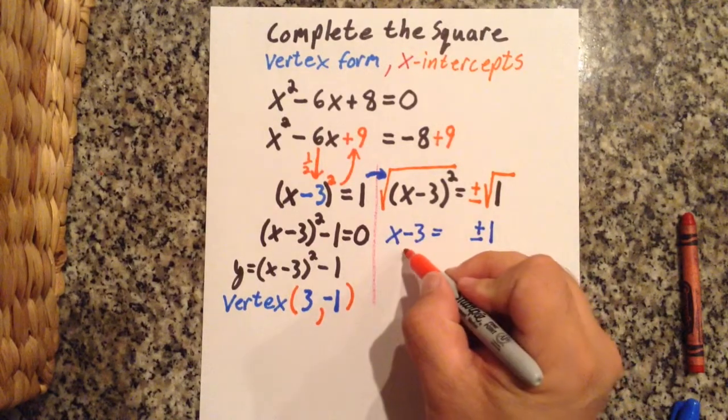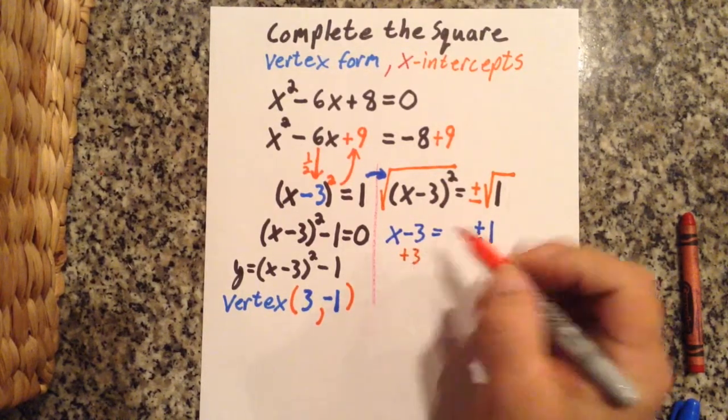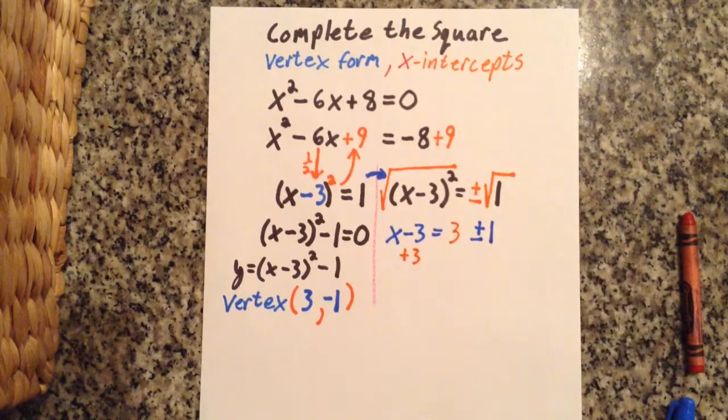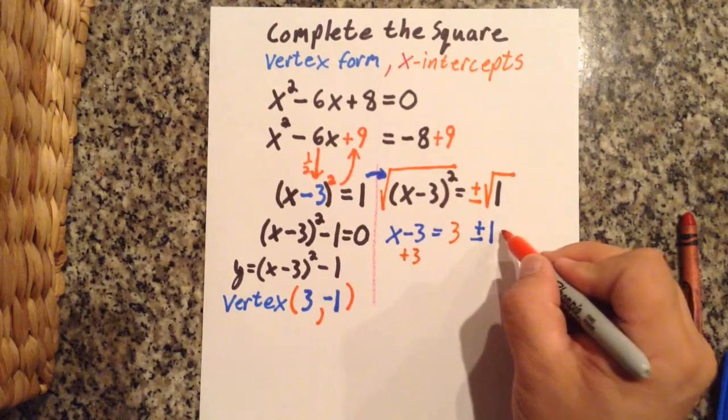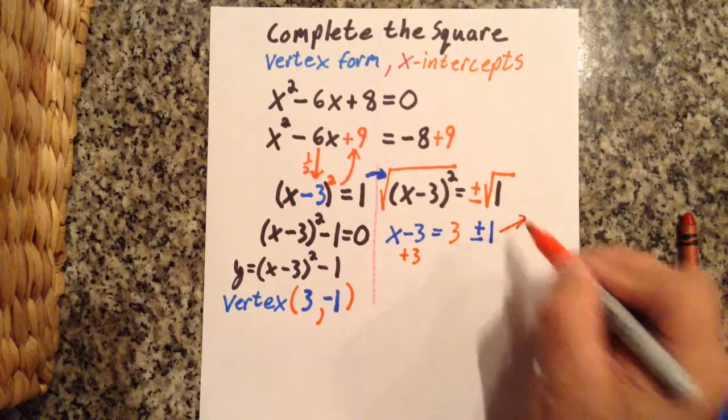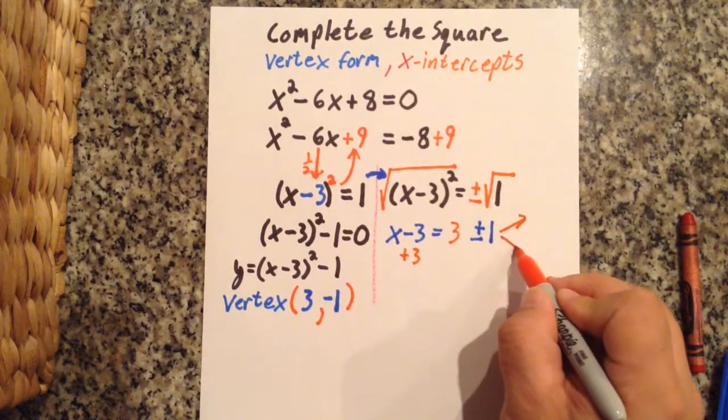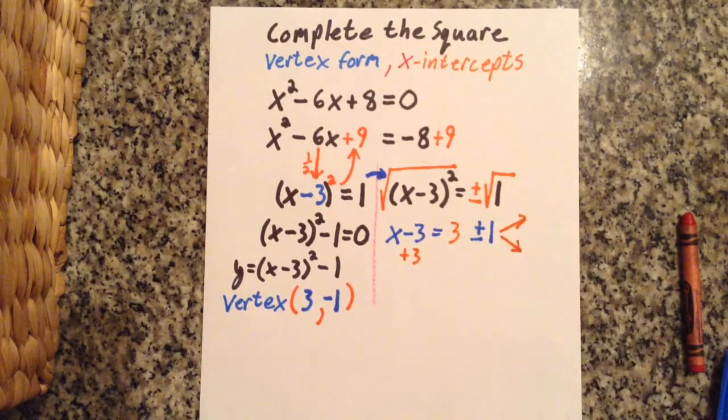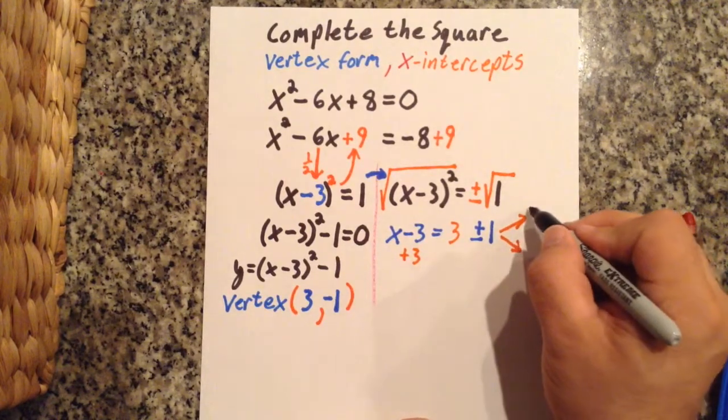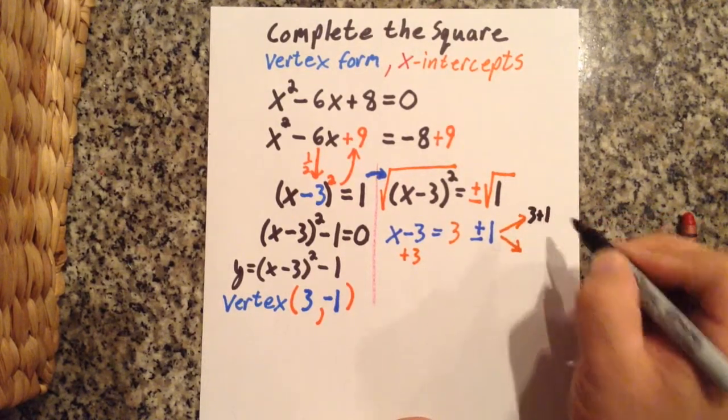Notice I left a little space again. The opposite of minus 3 is plus 3, so I add 3 to both sides. And this is going to give me 2 situations where 2 numeric answers. 3 plus 1, well that equals 4.